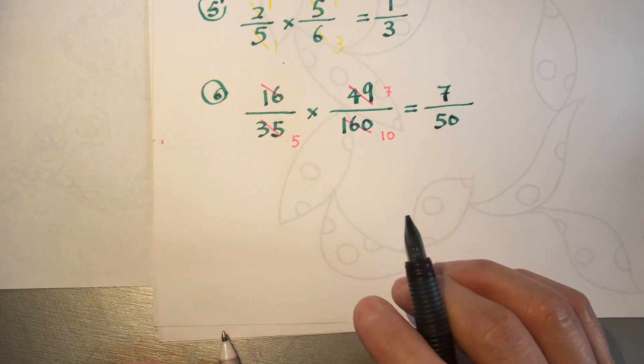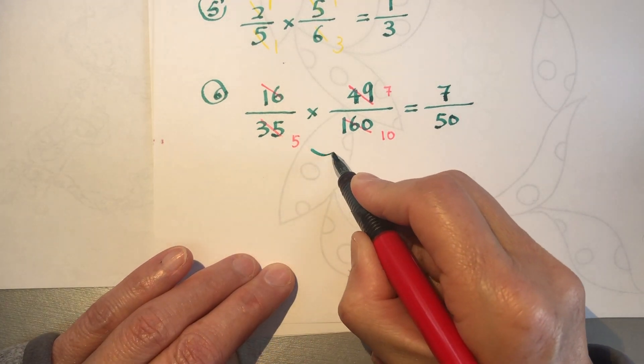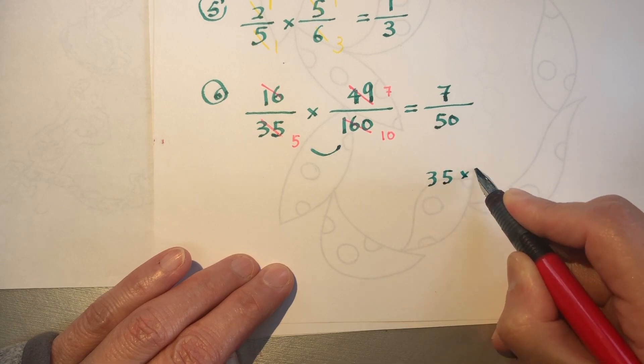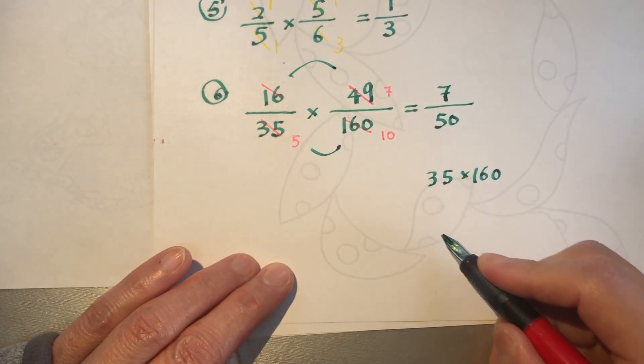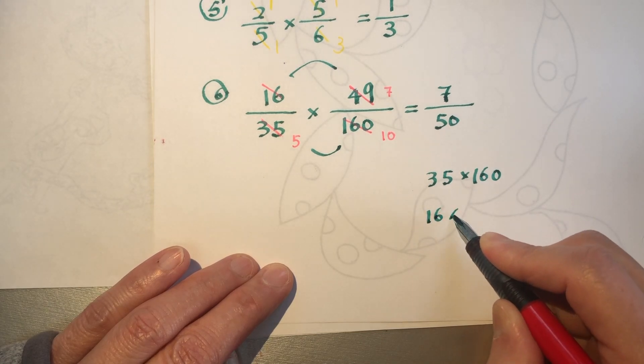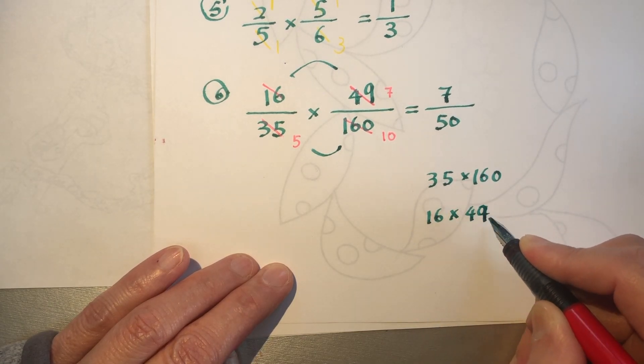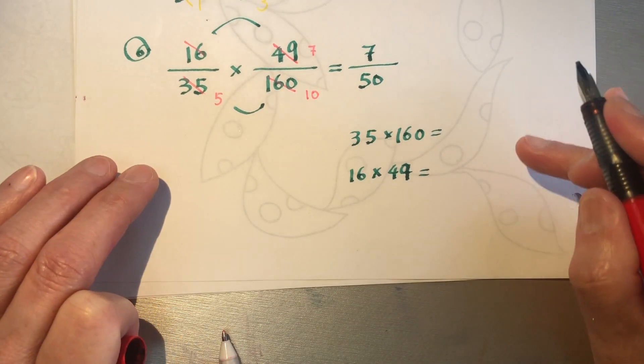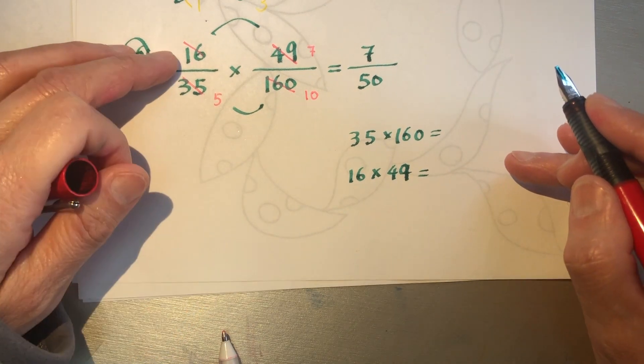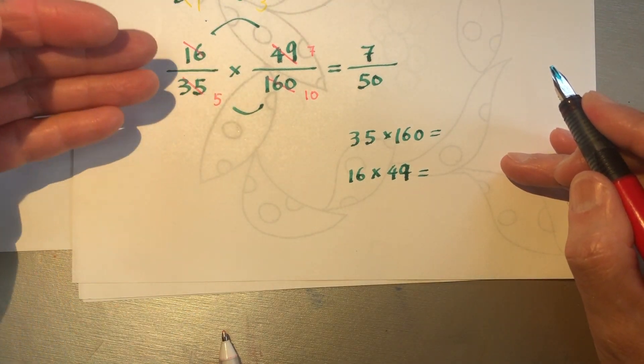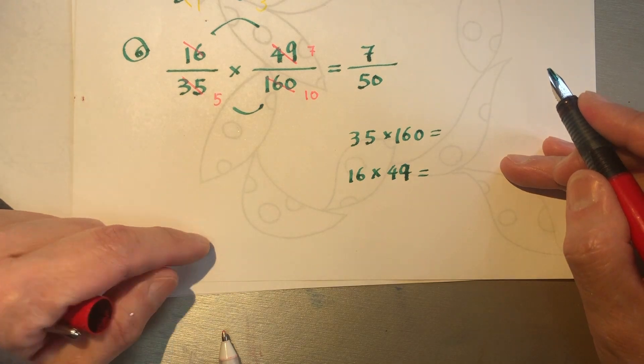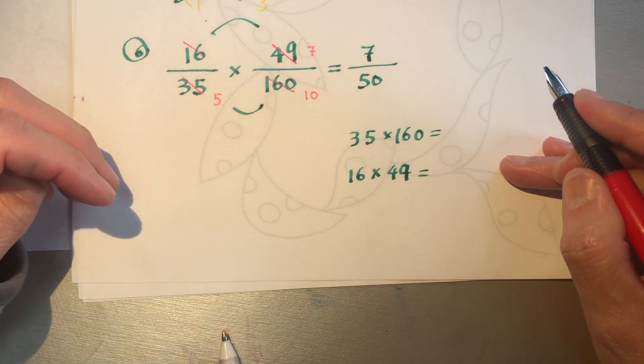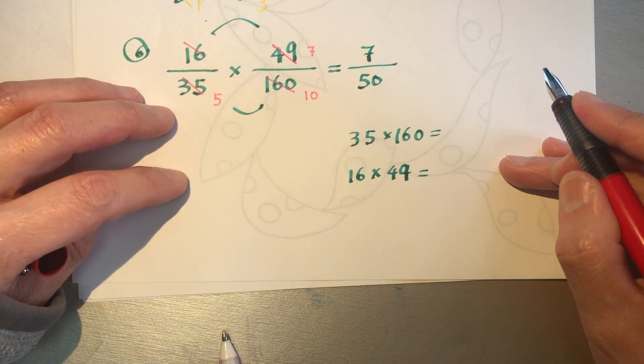Just imagine, if you use the old method, you would multiply 35 times 160, and on the top it will be 16 times 49. You will be able to do it. And there was one time I asked a student and tried to persuade them to do the simplified method. And she said no, I will put it into a computer and a calculator and then it solves everything.